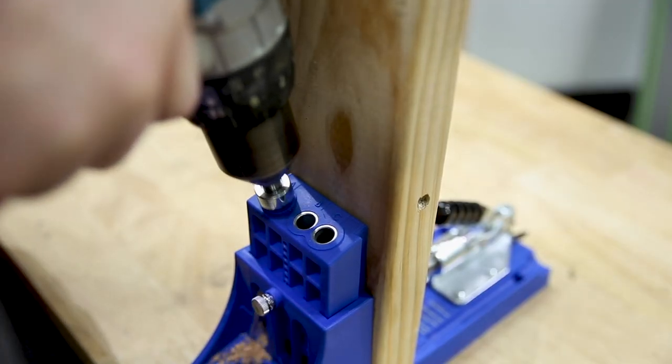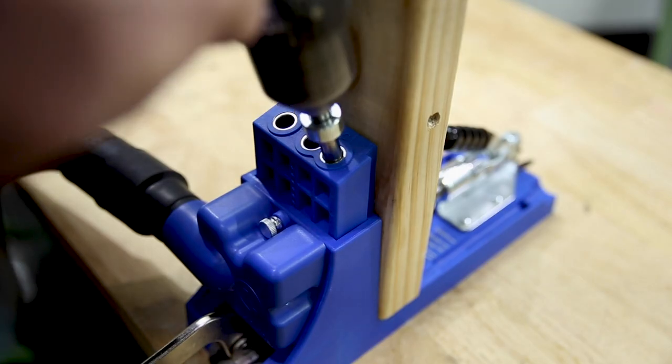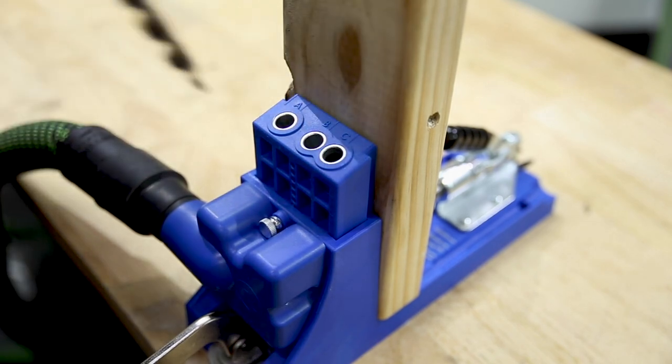And that dust extraction port not only keeps your bench clean, but it also sucks all the dust out of the hole as well. Once drilled, position both pieces of timber for your joint in place on a flat surface.